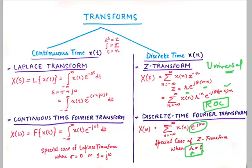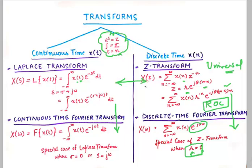We have seen the relationships between Laplace and Fourier, and between Z and DTFT. For the relationship between Laplace and Z, you can easily go from Laplace to Z using a simple substitution: e^s = Z. The integration sign is replaced by a summation sign, T is replaced by n, x(t) is replaced by x[n], and e^s is replaced by Z. So you can easily go from the Laplace transform to the Z-transform with this interpretation.